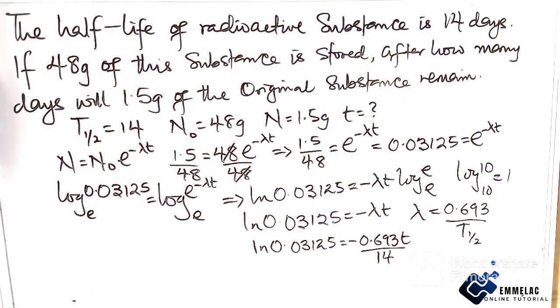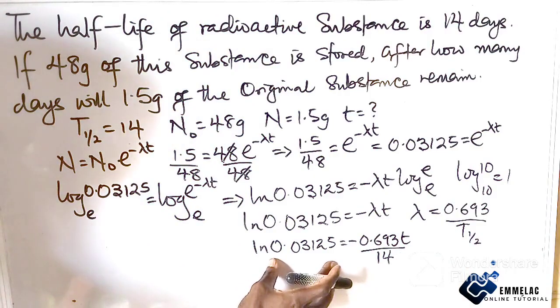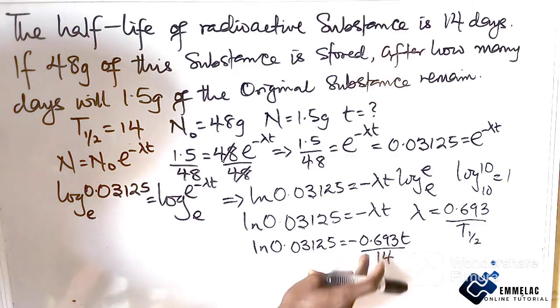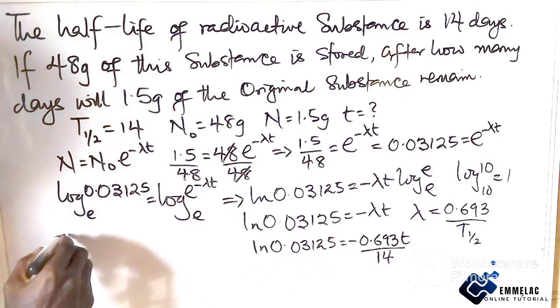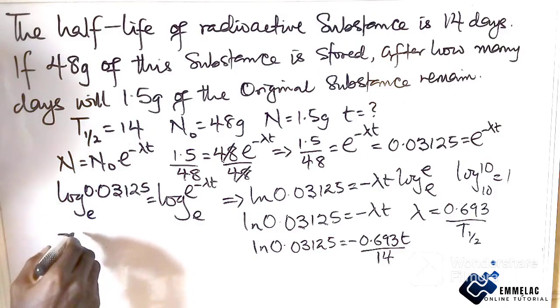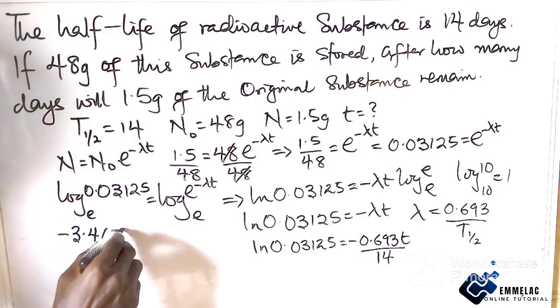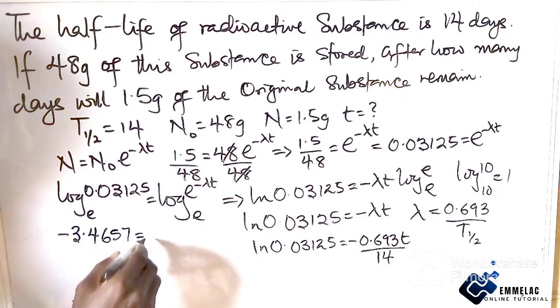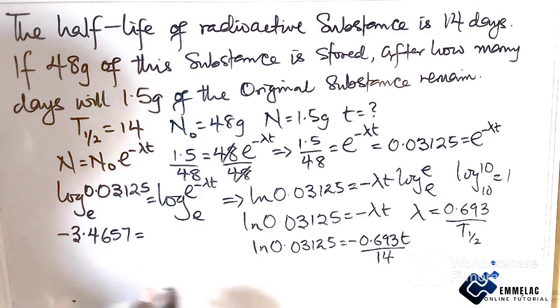So from here now, we calculate the value of the natural log of this value. The natural log of 0.03125 gives us on my calculator -3.4657.